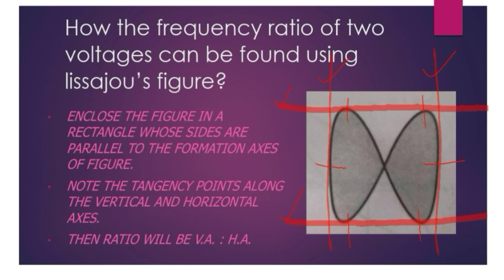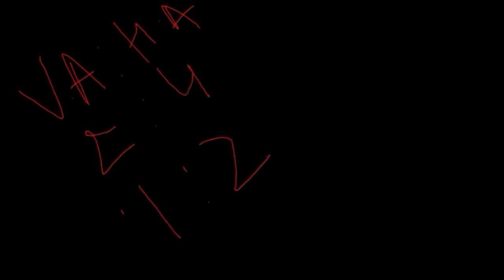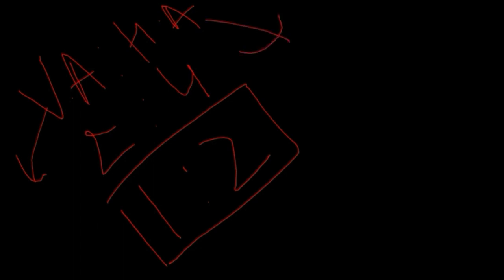Then frequency ratio of two voltages are Va is to Ha, that is vertical axis is to horizontal axis. And vertical axis has how many tangency points? Two. And horizontal has four. Then one is to two is our answer. And first it implies to the first voltage. And this implies to second voltage.